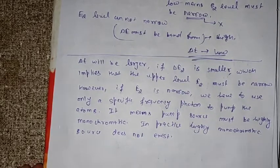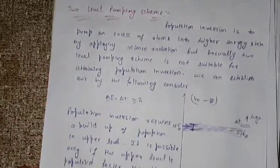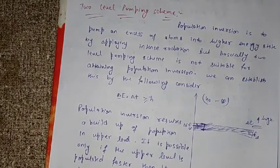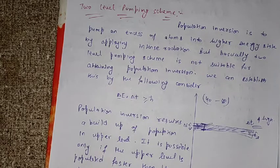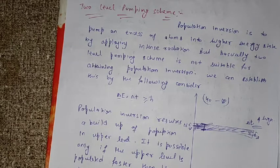This is why the two-level laser scheme is not useful — population inversion cannot be achieved. The Heisenberg Uncertainty Principle explains this: if delta T is long, delta E is small (narrow level), requiring monochromatic sources that don't exist. If delta E is high, delta T is low, so population inversion is not achieved. We will next study the three-level and four-level pumping schemes.